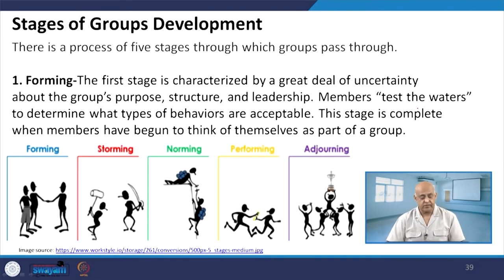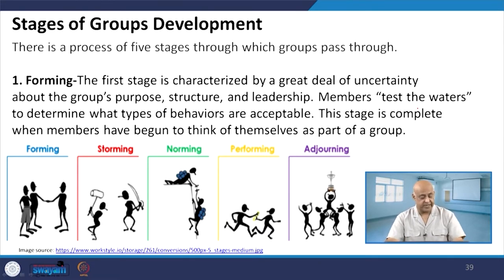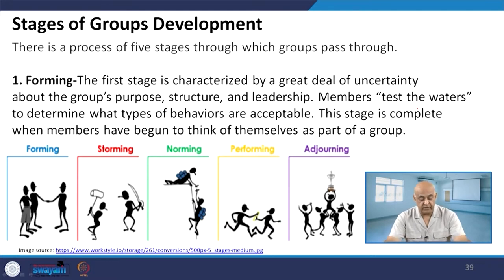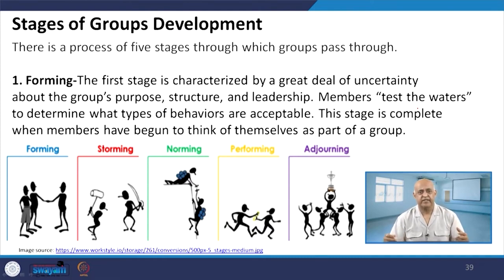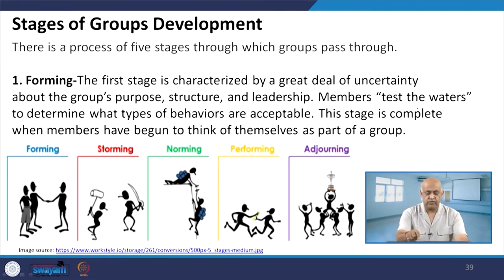There is a process of five stages: forming, storming, norming, performing, and adjourning. The first stage, forming, is characterized by a great deal of uncertainty about the group's purpose, structure, and leadership. Members test the waters to determine what type of behaviors are acceptable. This stage is complete when members have begun to think of themselves as part of a group. This becomes a very important step, as members come and join together and begin to start work.